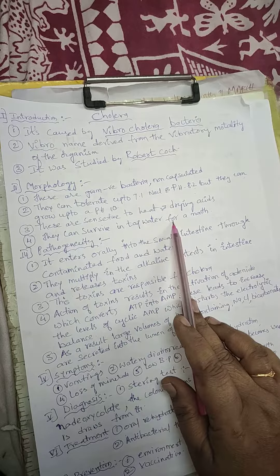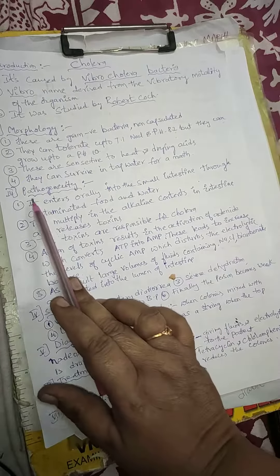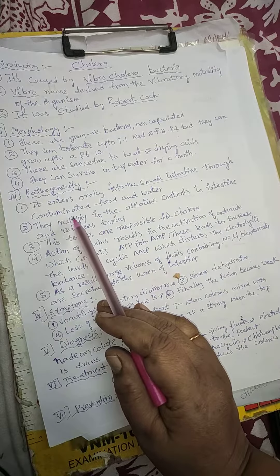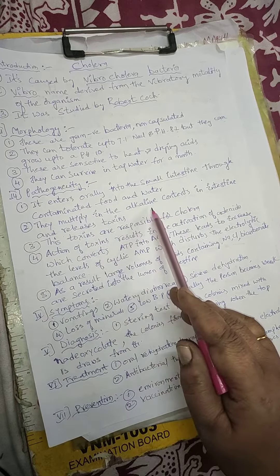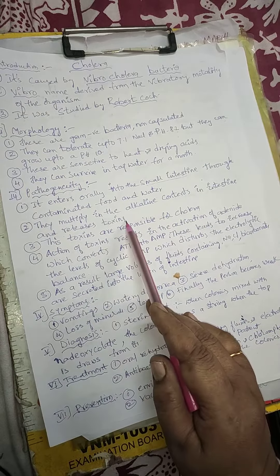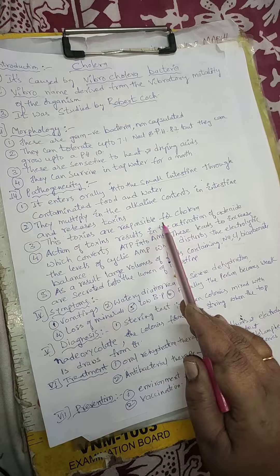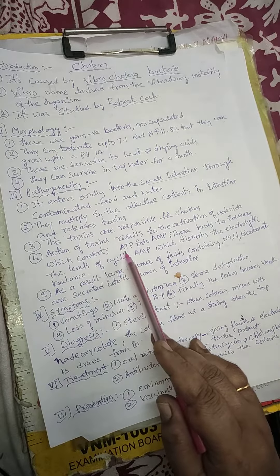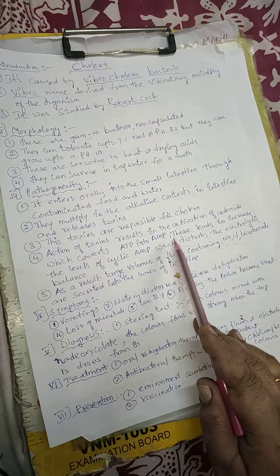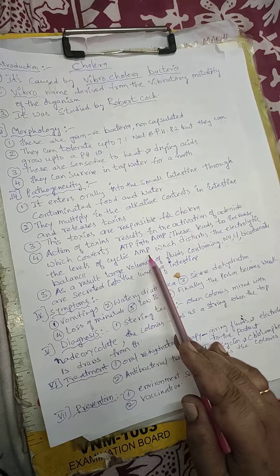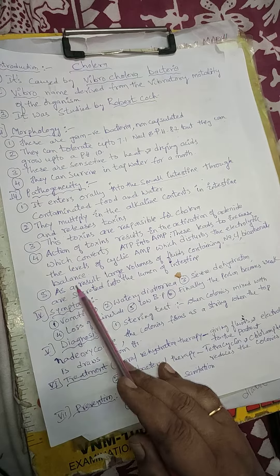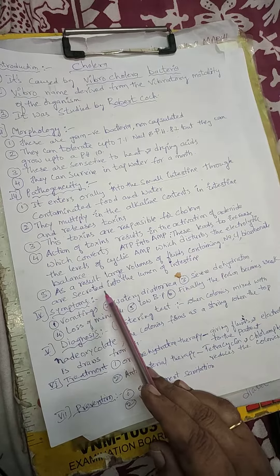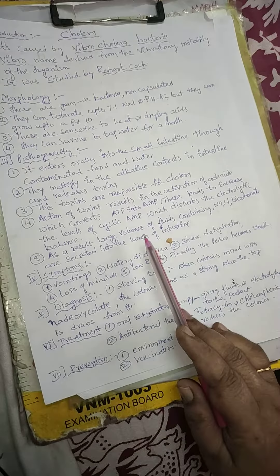They can survive in tap water for a month. The third side heading is pathogenicity. This bacteria enters orally into the small intestine through contaminated food and water. They multiply in the alkaline contents present in the intestine and release toxins. These toxins are responsible for cholera. Action of toxins results in the activation of adenylate cyclase, which converts ATP into cyclic AMP. This leads to increased levels of cyclic AMP, which disrupts the electrolytic balance.